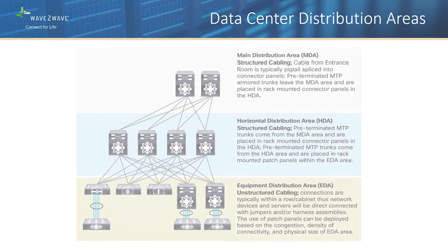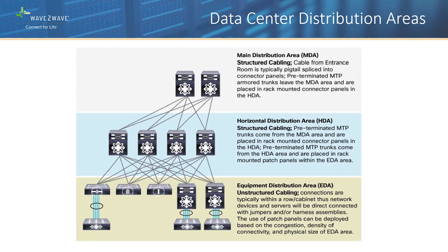A typical three-tier data center architecture consists of core switches in the main distribution area, aggregation switches in the horizontal distribution area, and access switches in the equipment distribution area. This factory architecture places interconnection spine switches in the MDA and access leaf switches in the HDA or EDA, each connecting to every interconnection switch in a mesh connectivity network typically via optical fiber. Data center administrators are looking to reduce space and power consumption while increasing flexibility and control, requiring newer, more agile Layer 0 architectures.